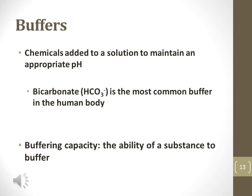Buffers are any molecule that can be added to a solution to help maintain an appropriate pH range in a solution. Bicarbonate is the most common buffer in human blood, which must remain at a basic pH of 7.4. Buffering capacity is the measurement of how well a buffer can perform this task of stabilizing the pH of a solution.